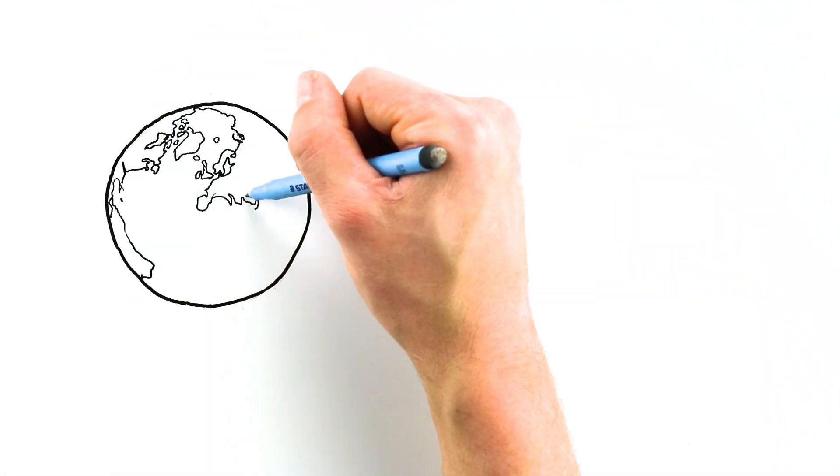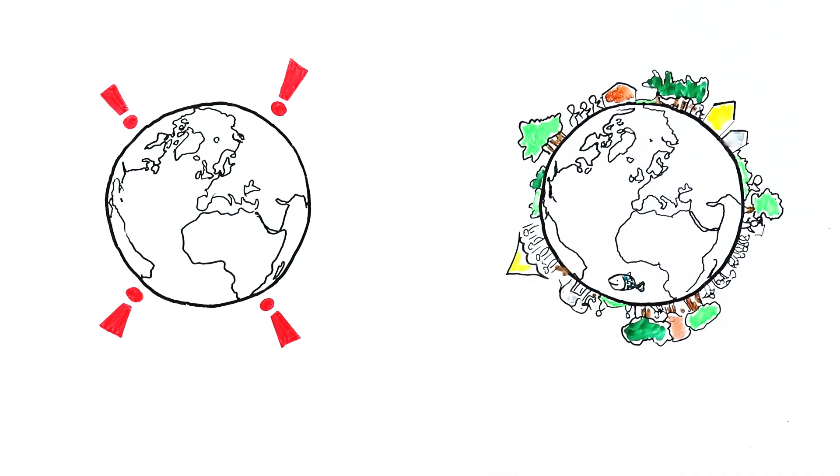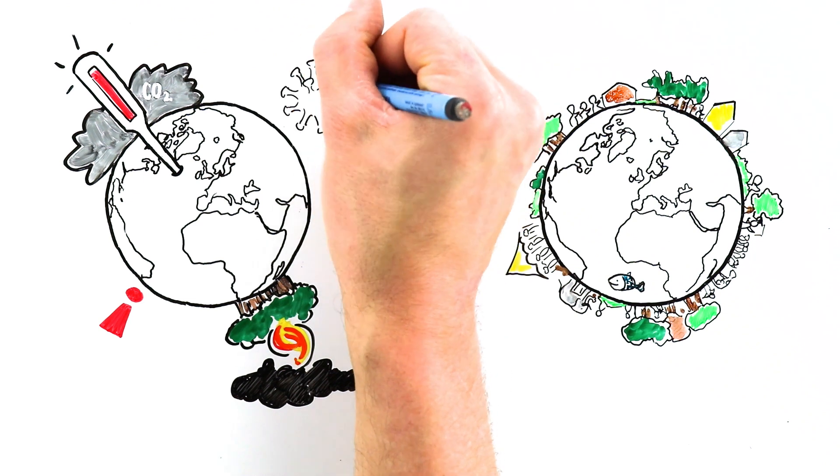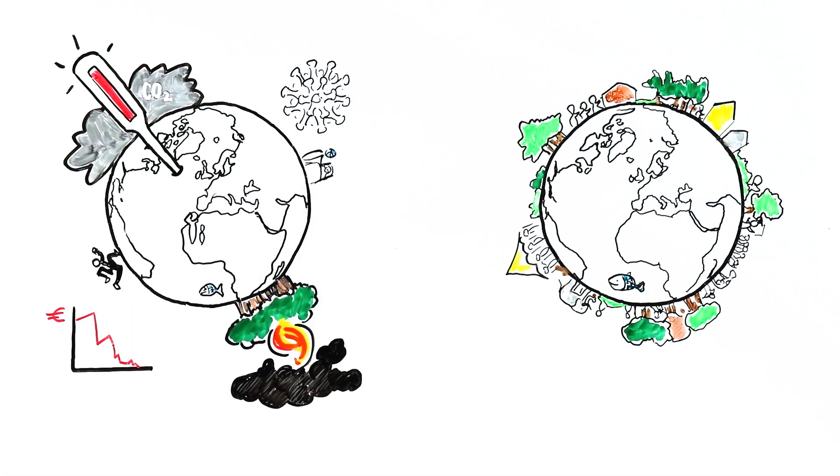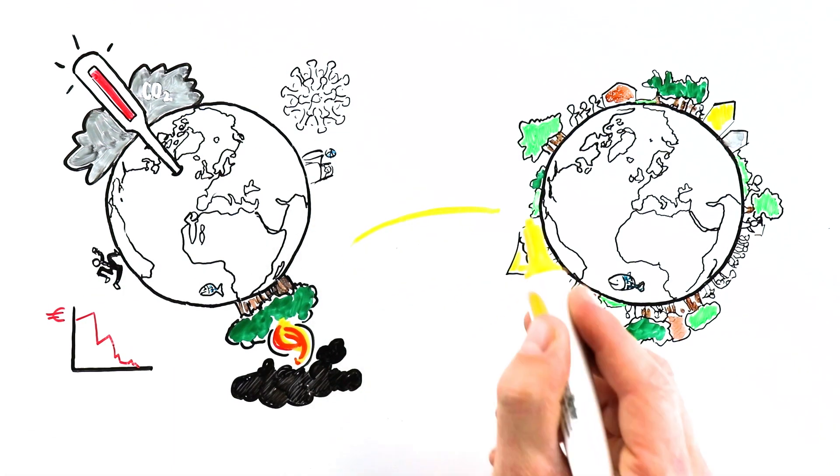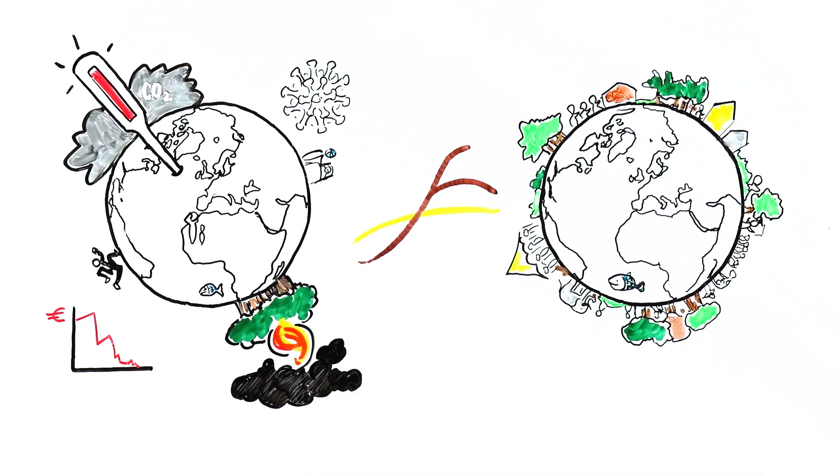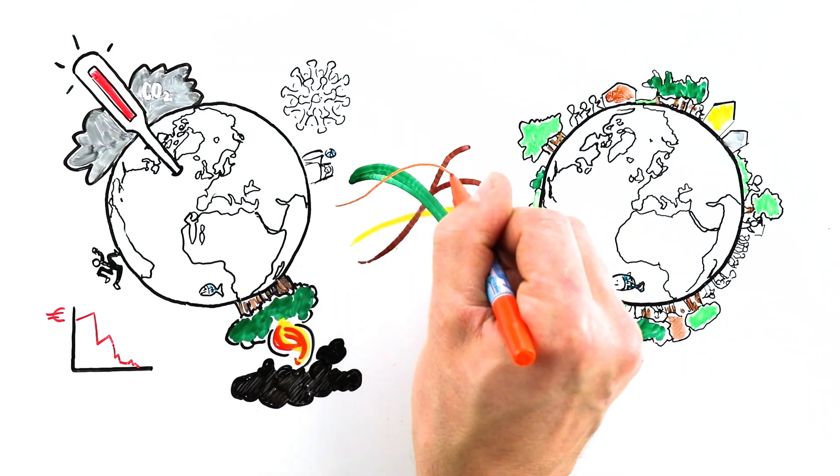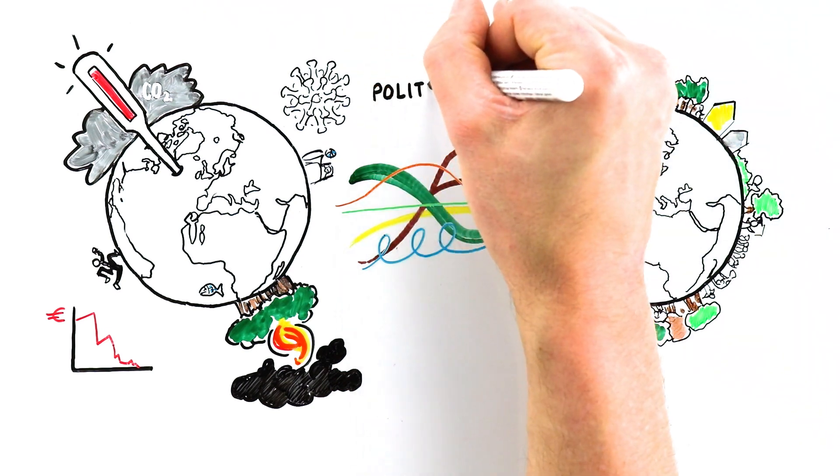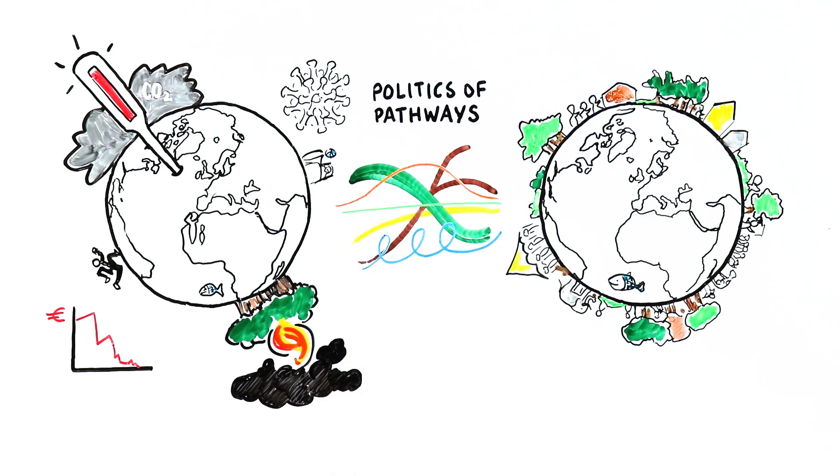The problems we face won't be easily solved. But other worlds are possible. To flourish in our complex, turbulent and uncertain world, we need to let go of control. There's no one solution. We need a fundamentally different approach to sustainability, with a politics of pathways at the centre.